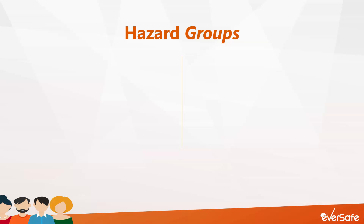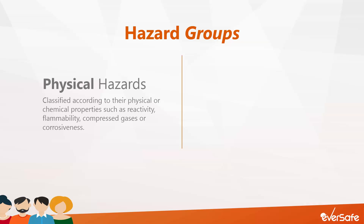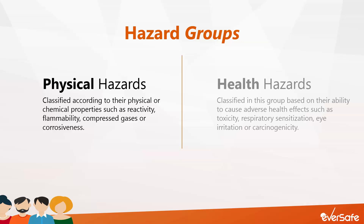WHMIS 2015 applies to two major hazard groups: physical and health. Each of the two hazard groups has hazard classes characterized by specific hazardous properties. The hazardous products in the physical hazards group have been classified according to their physical or chemical properties, such as reactivity, flammability, compressed gases, or corrosiveness on metals.